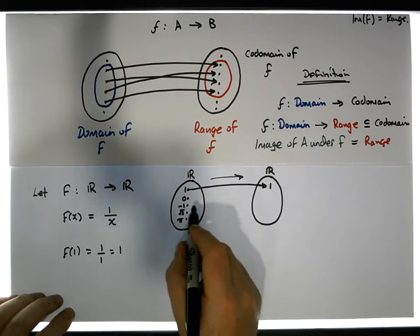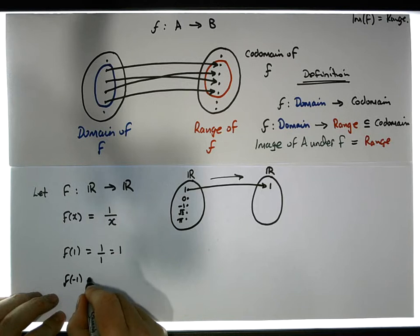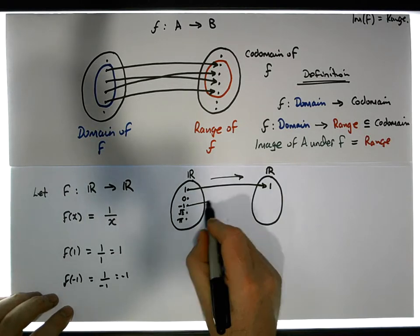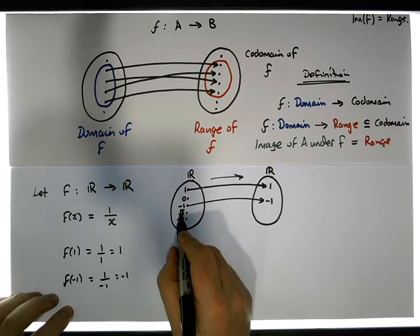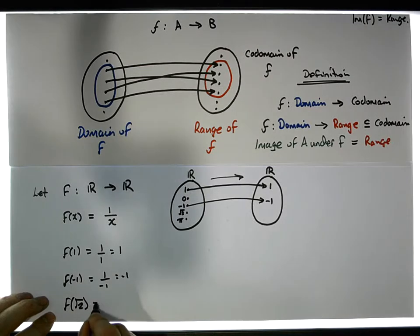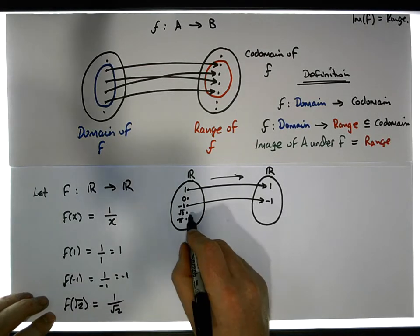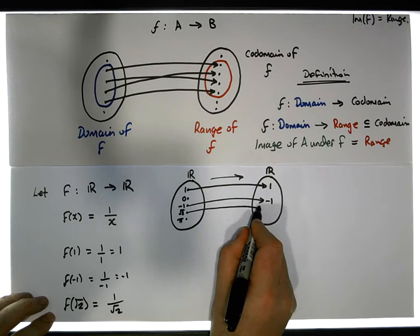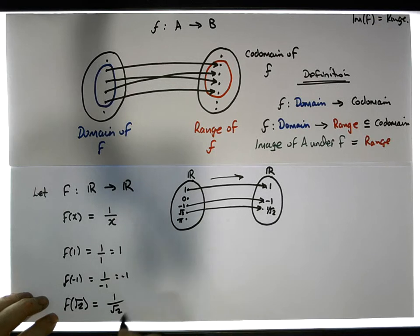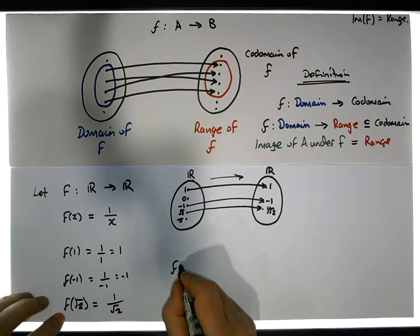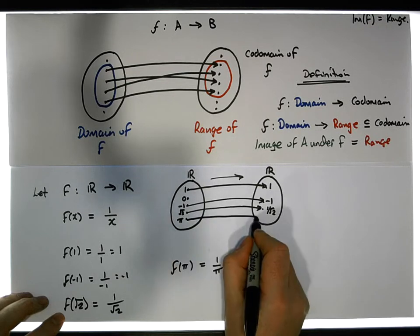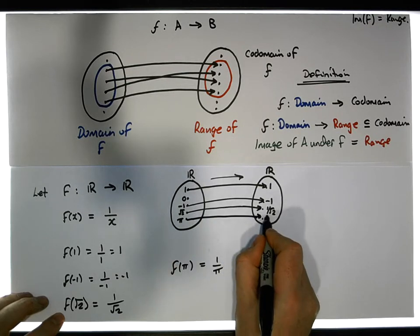What about minus one? Well, f of minus one is equal to one over minus one, which is equal to minus one. So the value minus one is taken into the value minus one. What about the square root of two? Well, f of the square root of two is taken across into one over the square root of two. So the square root of two is mapped across to one over the square root of two. And what about pi? Well, f of pi is equal to one over pi, so that's mapped across to some number which is one divided by pi.